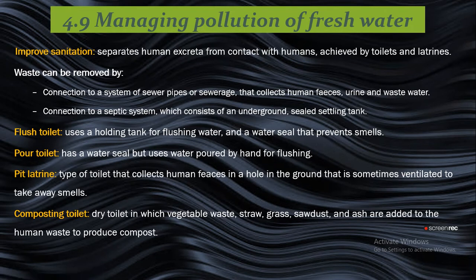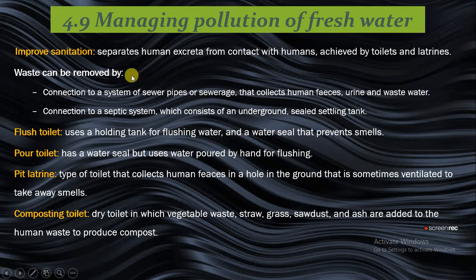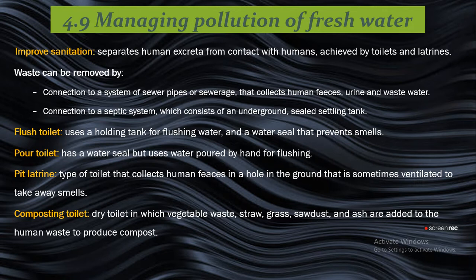First, improve sanitation. It has to do with separating human excreta from contact with humans, which is achieved by toilets and latrines. Waste can be removed by connection to a system of sewage pipes or sewage ridge, which collects human faeces, urine, and waste water. That's one major function of having a sewage pipe.